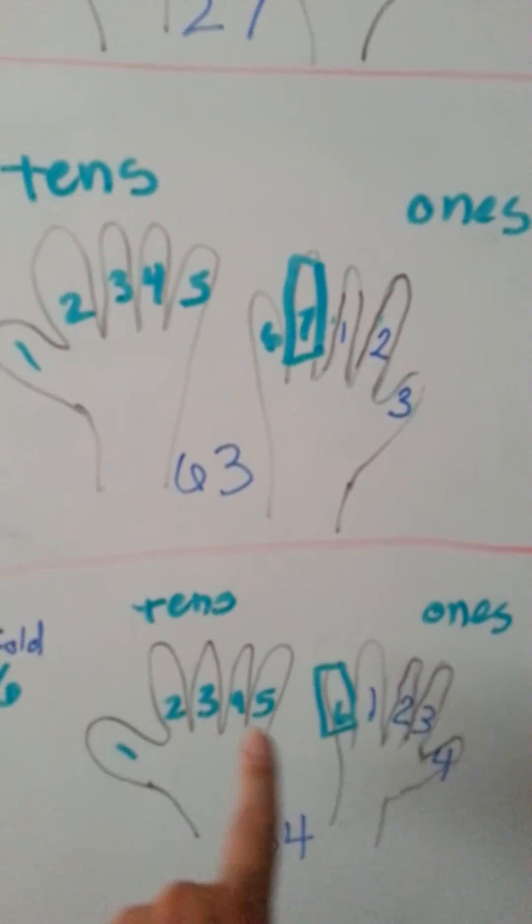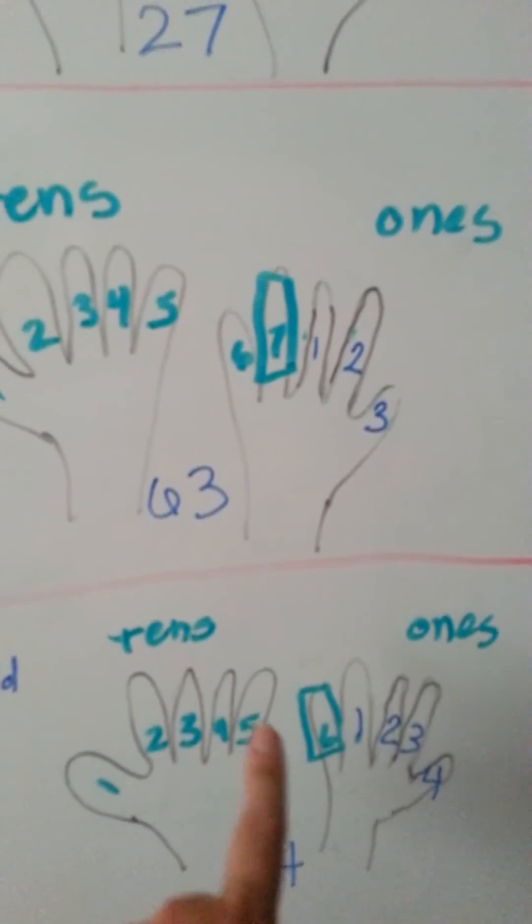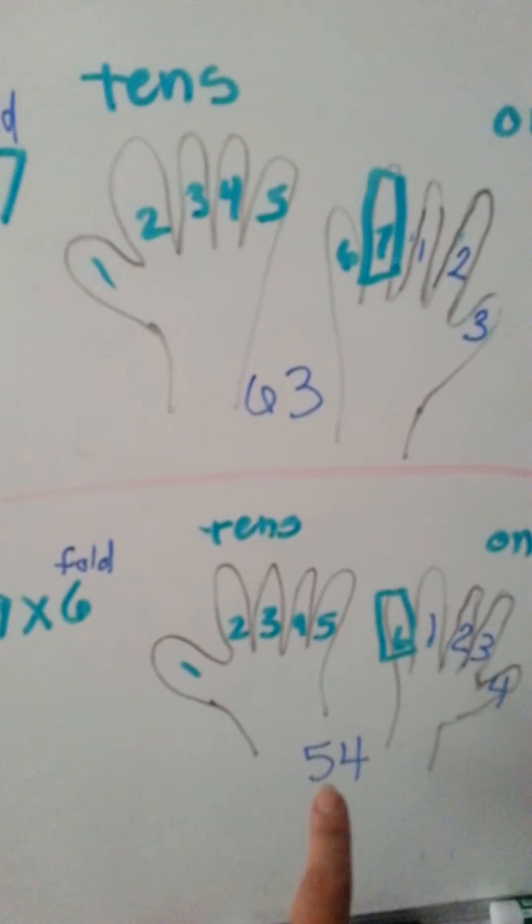That's going to give us this side for tens, and this side of the folded finger is the ones. 1, 2, 3, 4, 5 tens, 4 ones. So 9 times 6 is 54.